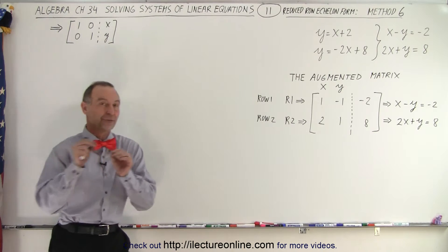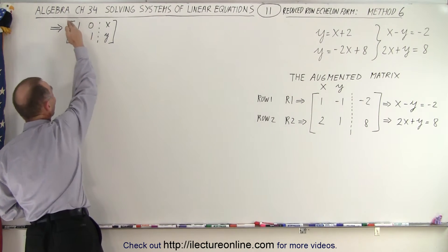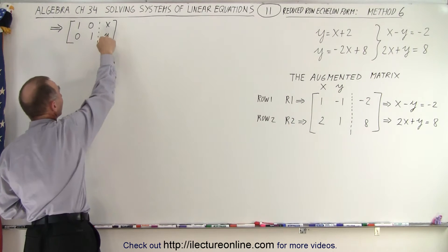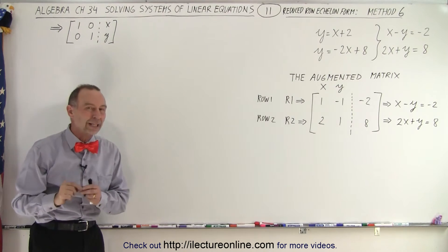We're going to take it a step further and change it into this form, where we have ones across the diagonal and zeros everywhere else. Then the numbers on the right side of that dashed line will become the values for x and y that we're looking for.